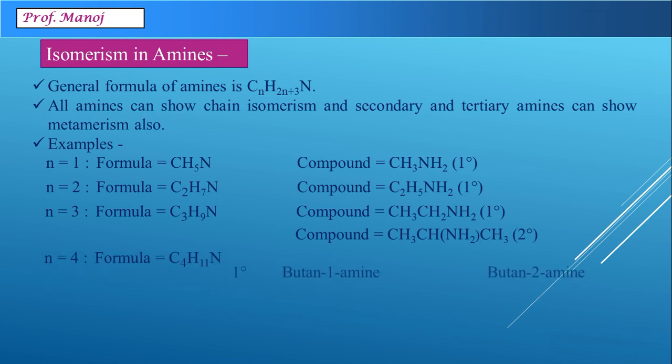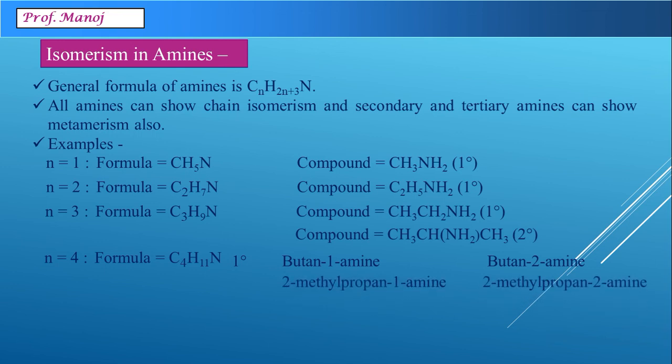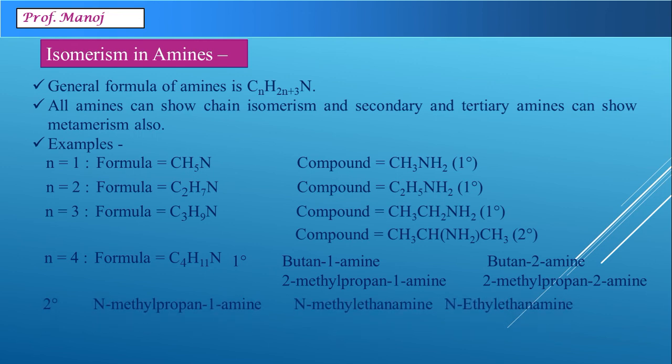For N=4, the primary amines are butan-1-amine, butan-2-amine, 2-methylpropan-1-amine, and 2-methylpropan-2-amine — four primary amines in total. Under secondary amines we have three compounds: N-methylpropan-1-amine, N-methylethanamine, and N-ethylethanamine. The list of isomers is a quite frequent question in most competitive exams, and most textbooks do not give this information, so add these compounds from N=1 to N=4 in your notes.